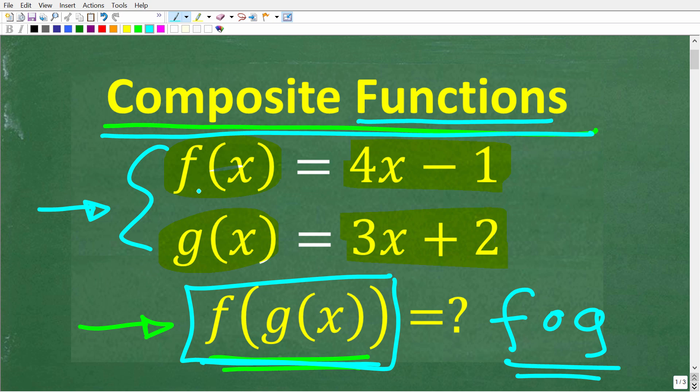Okay, so once again, f(x) is equal to 4x minus 1. g(x) is equal to 3x plus 2. What is f(g(x)) equal to? All right, so let's take a look at the answer.